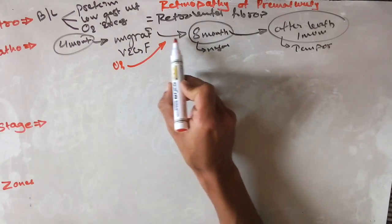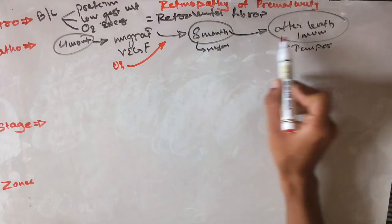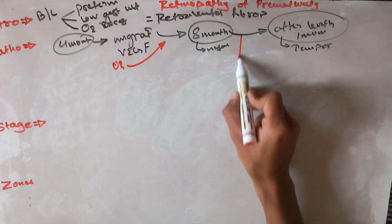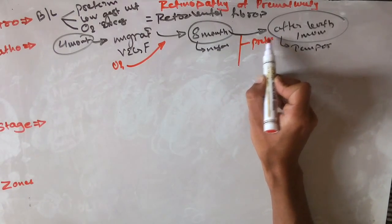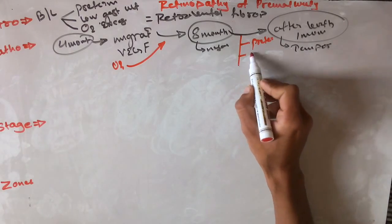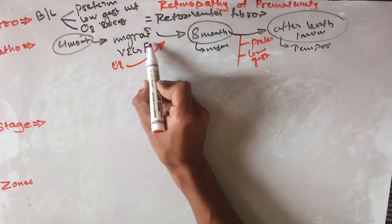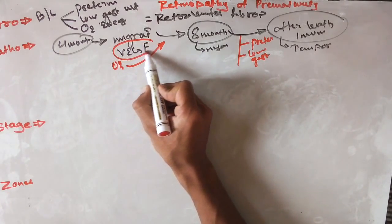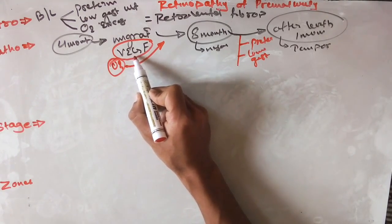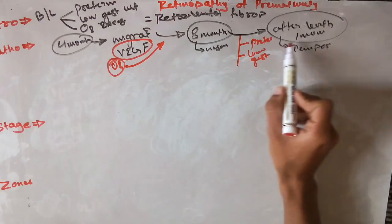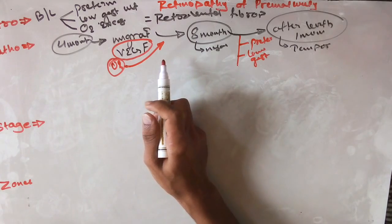In the case of preterm birth, the temporal and nasal vessels are still developing from the eighth month to one month after birth. If a preterm baby is born, it is obvious that the vasculature has not yet developed. Similarly, in low gestational age the vascular endothelial growth factor is not active. Oxygen supplementation causes a decrease in the activity of vascular endothelial growth factor, so vessels do not develop.